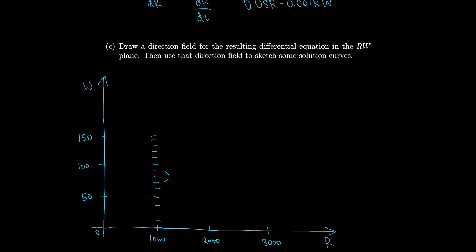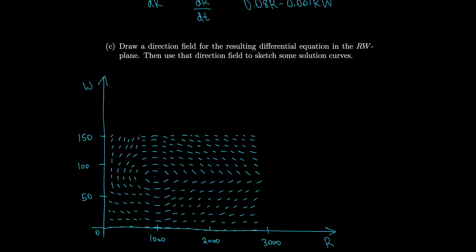Similarly, if we go less than 1000 rabbits but more than 80 wolves, then it increases a little bit. And if we go less than 1000 rabbits and less than 80 wolves, it decreases. We can keep applying those patterns to calculate more slope values. We can see that it approaches our equilibrium point where the slope levels off. We can keep doing this and fill out the rest of our slope field. You get roughly something like this.